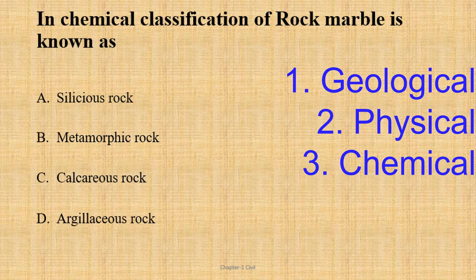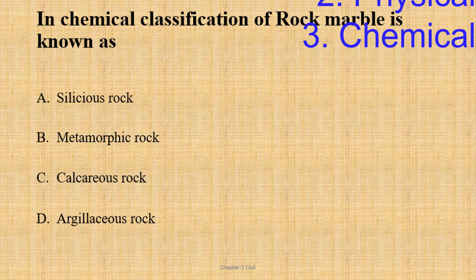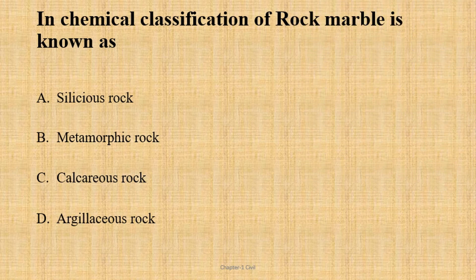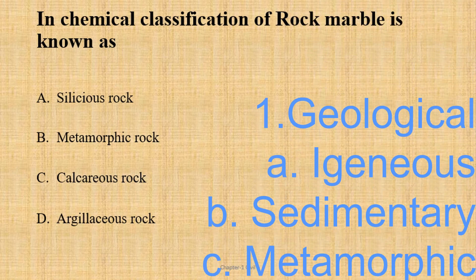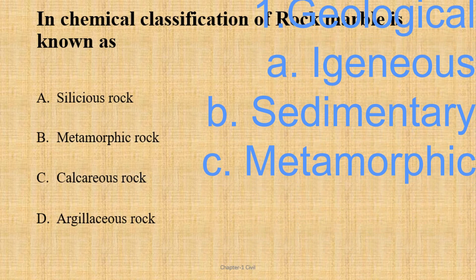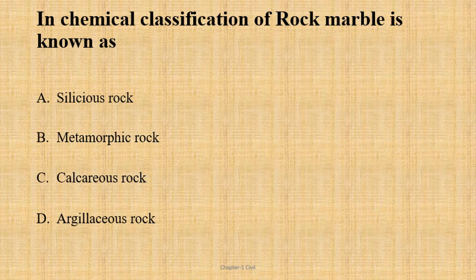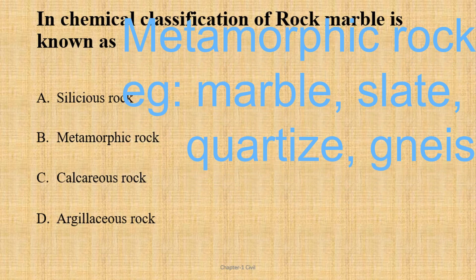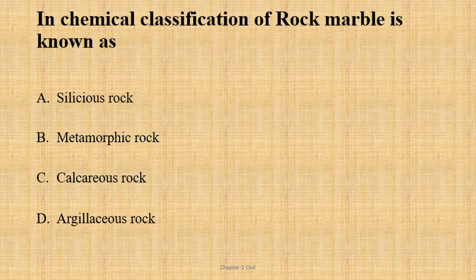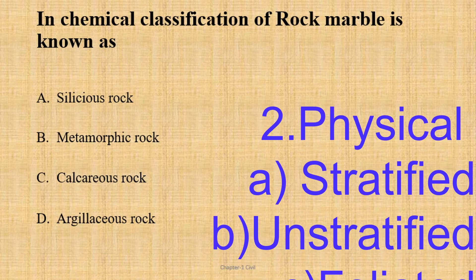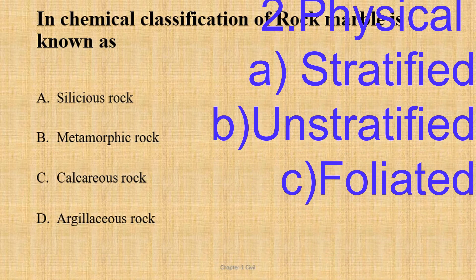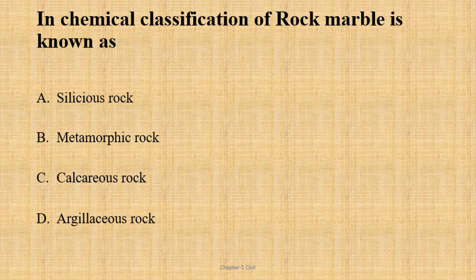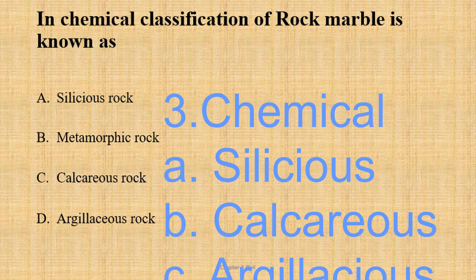Geologically, stones are classified as: Physically and Chemical. The geological classification is Igneous, Sedimentary, and Metamorphic. The next item is the chemical classification of marble.